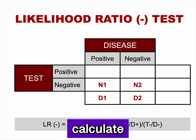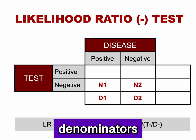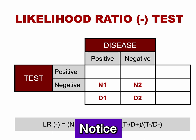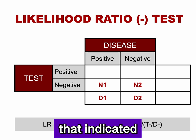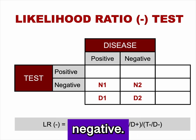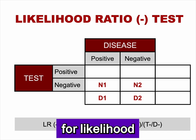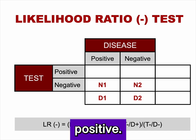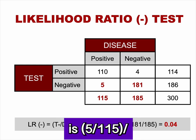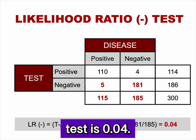You can also easily calculate the likelihood ratio of a negative test from the 2x2 table. We only use the two cells indicating a negative test, plus the same marginal totals. The denominators for the likelihood ratio of a negative test are the same as for the positive test. The likelihood ratio of a negative test is 5/115 divided by 181/185, giving a likelihood ratio of 0.04.